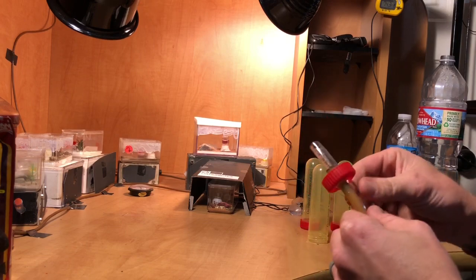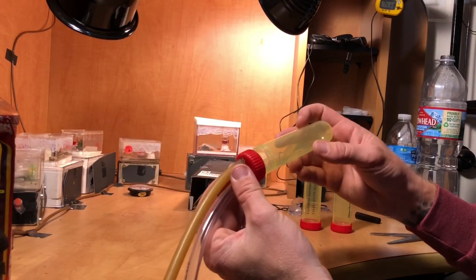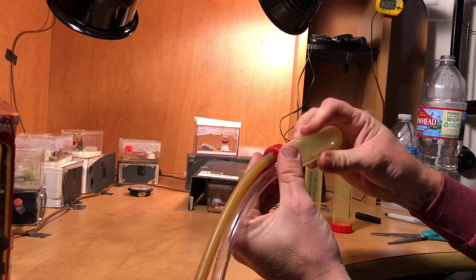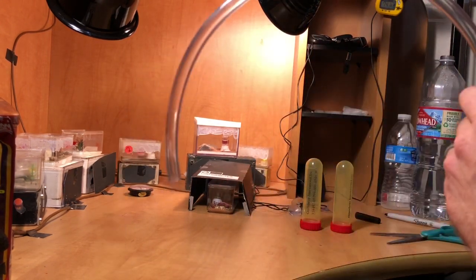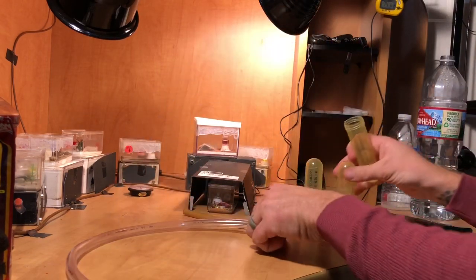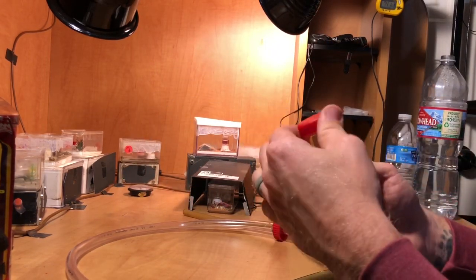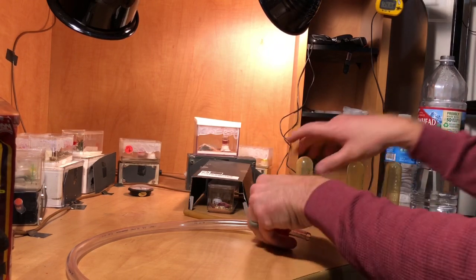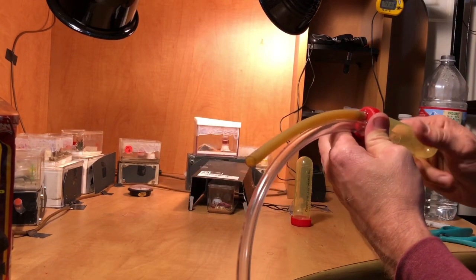So I want to show you the next step. Now the reason you buy extra test tubes is so after you've caught a colony or a queen, you can just take the tube off of the aspirator, put a cap on it, and then move on to the next one.